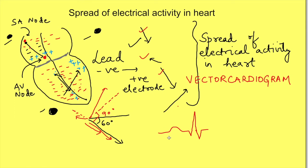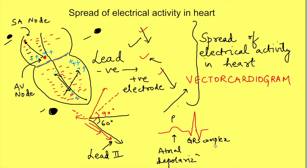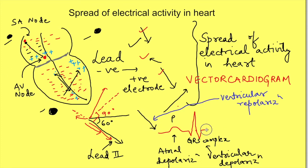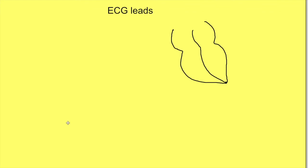We just saw how atrial and ventricular depolarization will be recorded in lead 2 of ECG. Yes, the direction of the lead shown here is lead 2, and we have just obtained our P wave - recorded due to atrial depolarization - and QRS complex, obtained due to ventricular depolarization. During ventricular repolarization, the vector direction is also along the direction of the lead, so it is recorded as a positive wave in lead 2.